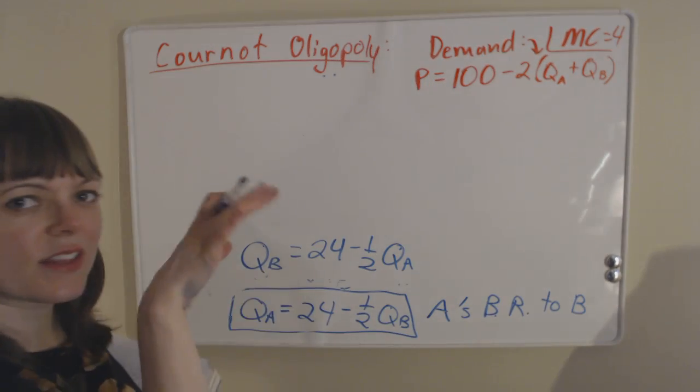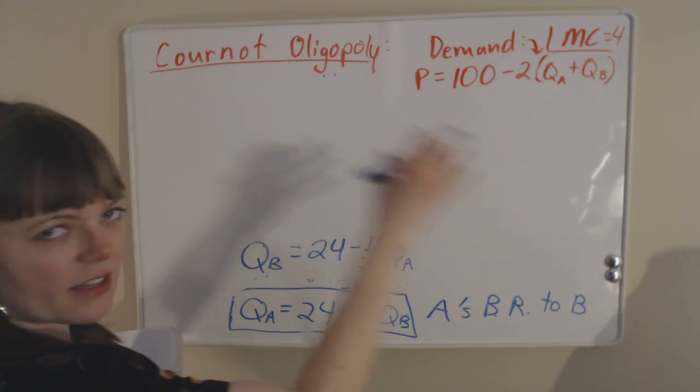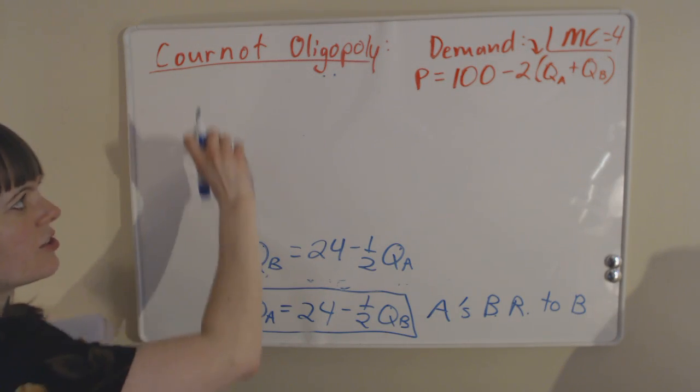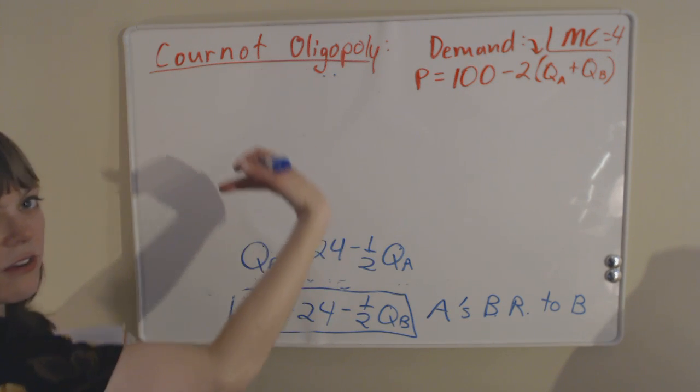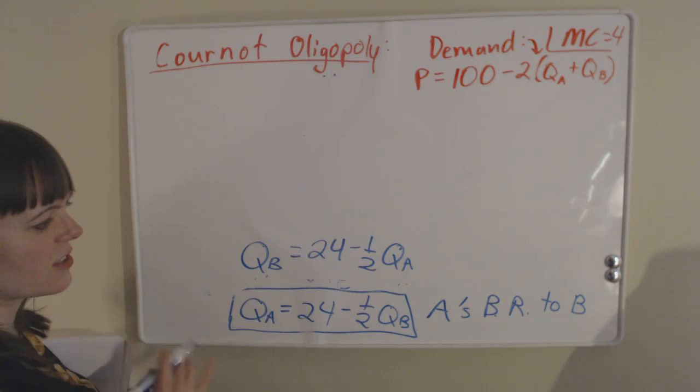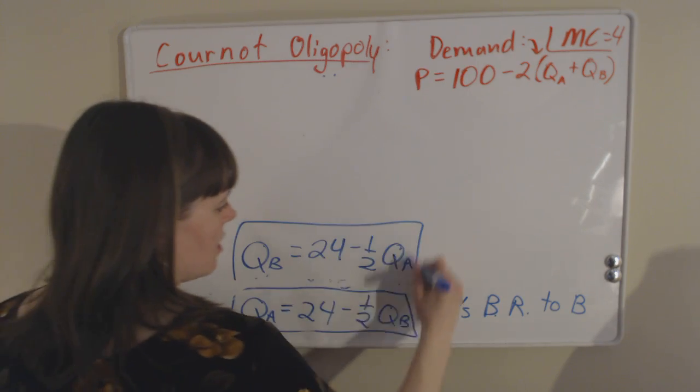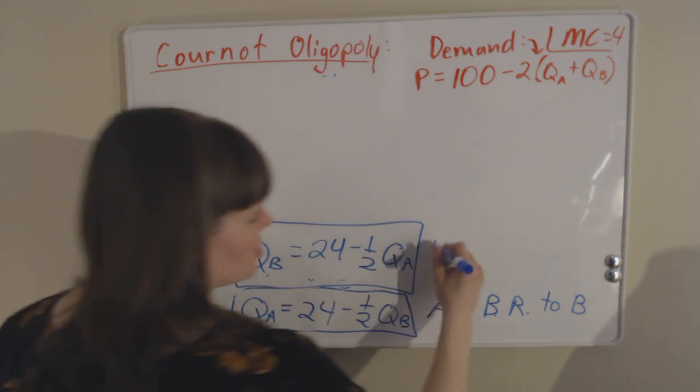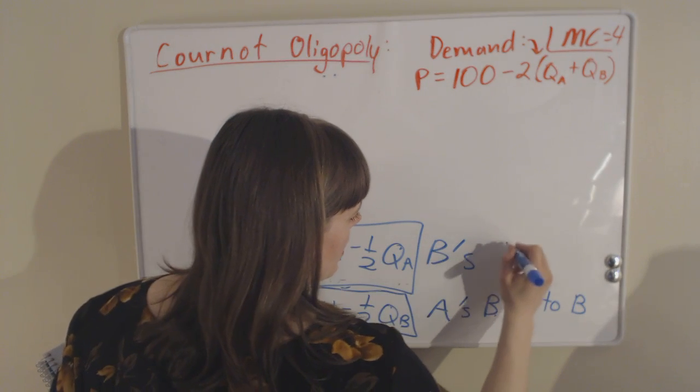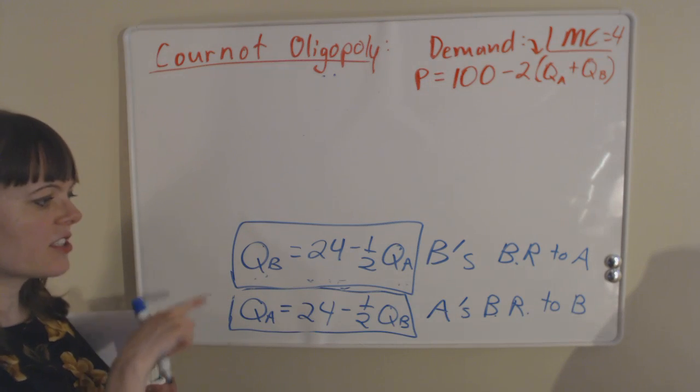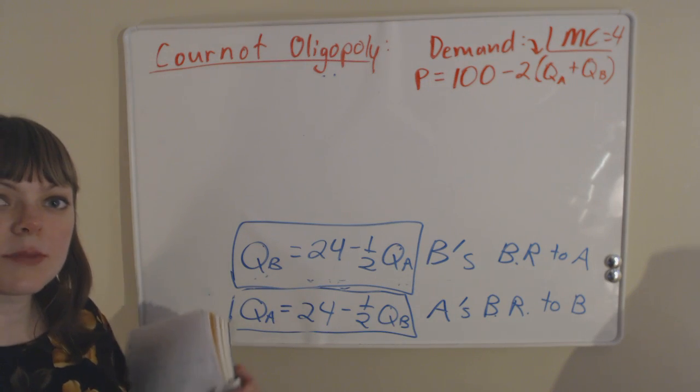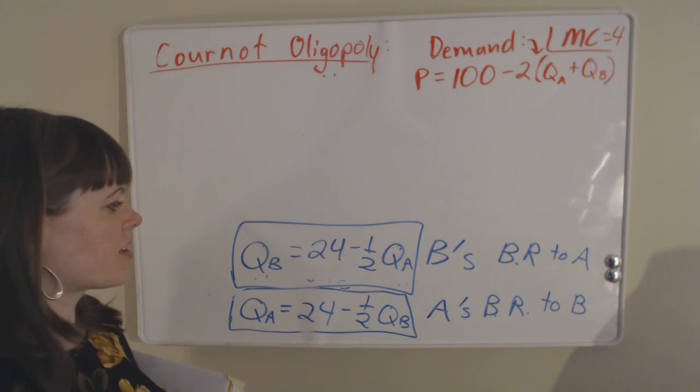You get that using the same methodology: plug the demand function into price in the profit function, solve, take the first order conditions, and solve the first order conditions. You have two best response functions, A's best response to B and B's best response to A. It's two equations and two unknowns, and we're going to plug those equations into one another to solve.